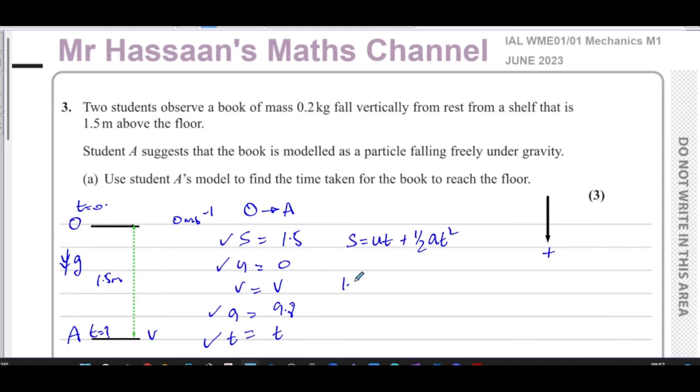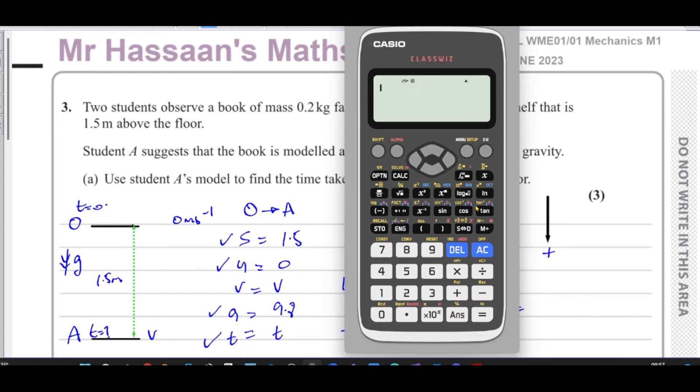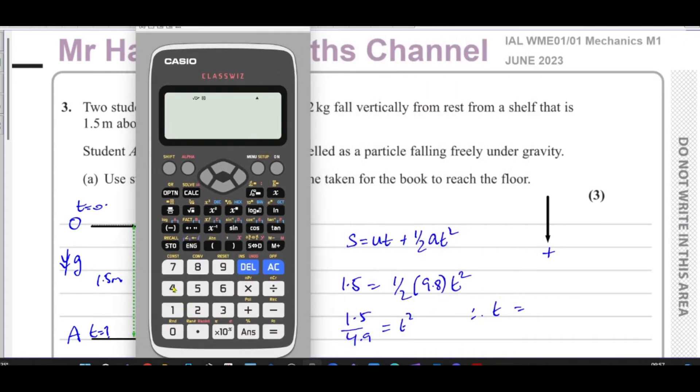So you're going to have, we know S is 1.5. We know U is zero, so this is just going to become zero. It's going to be a half times 9.8 times T squared. So we end up with 1.5 over 4.9 equals T squared. So therefore T is going to be, so we take the square root of 1.5 over 4.9.